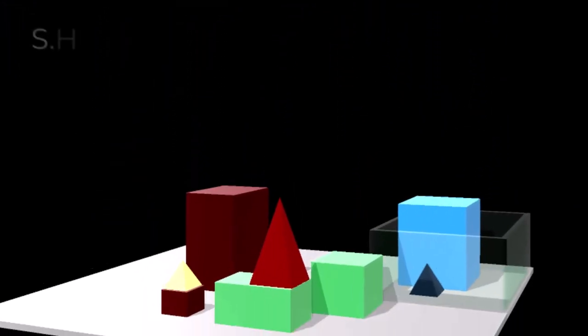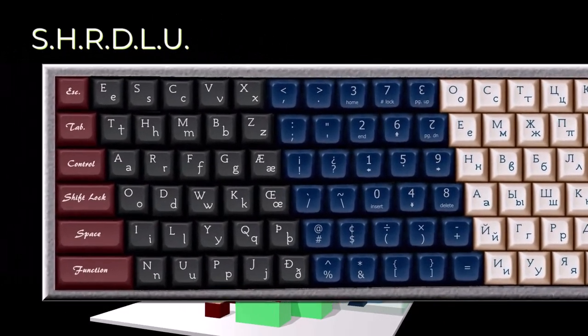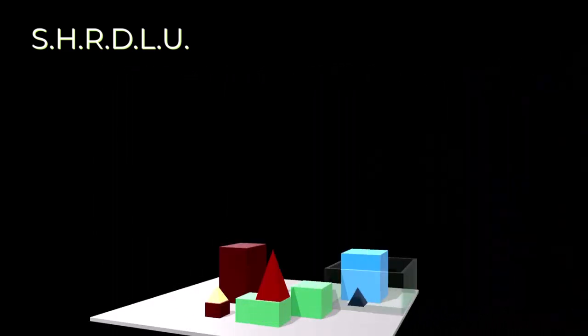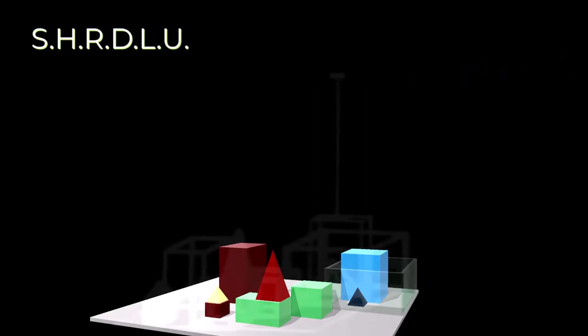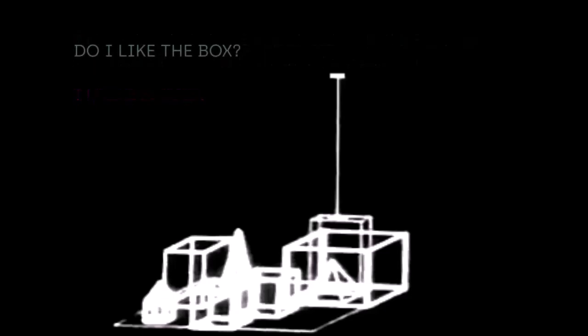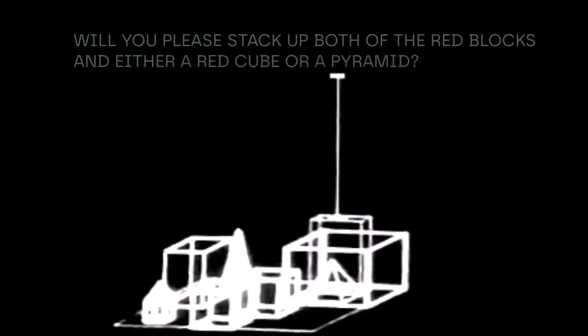Years later in the 1970s, a breakthrough in object recognition was made which, in combination with a smaller large language model, was able to recognize simple building blocks of the sort infant children still play with today. The program was called SHRDLU, which doesn't stand for anything but is named after an optimized keyboard array. In truth, the building blocks never existed outside the imagination of SHRDLU's mind, but an operator could see the building blocks on a screen. Here's part of a conversation an operator had with SHRDLU: 'The blue pyramid is nice.' 'I understand.' 'I like blocks which are red, but I don't like anything which supports a pyramid.' 'I understand.' 'Do I like the box?' 'No.' 'Do I like anything in the box?' 'Yes, two things: the blue block and the blue pyramid.' 'Will you please stack up both of the red blocks and either a red cube or a pyramid?' 'Okay.'